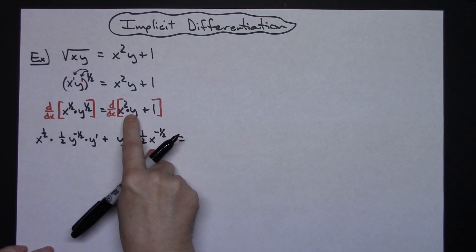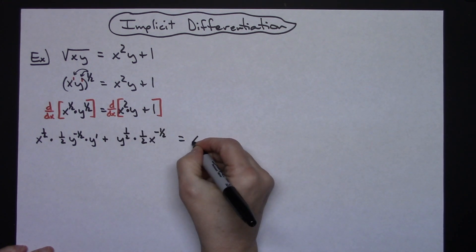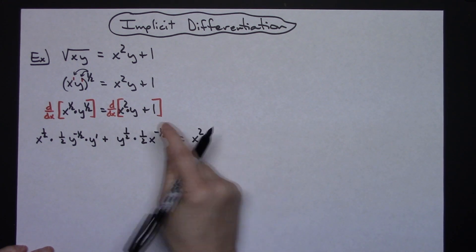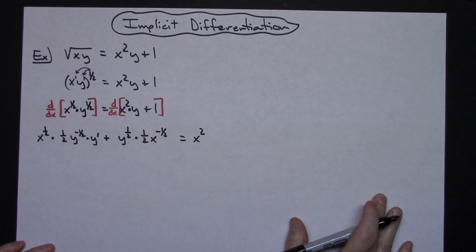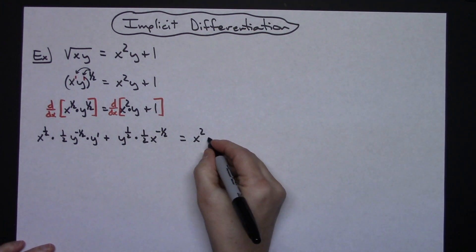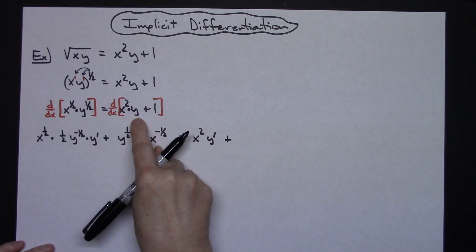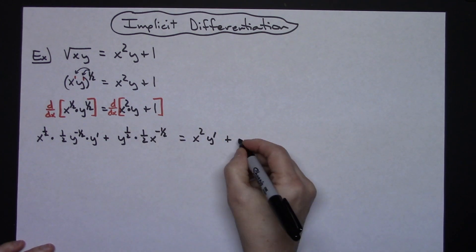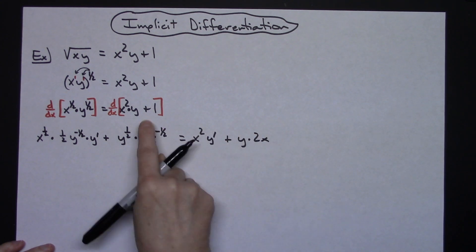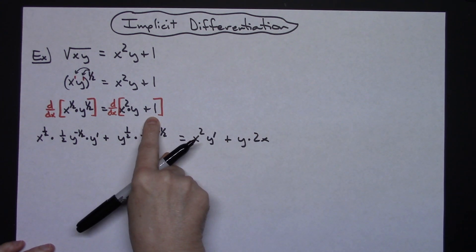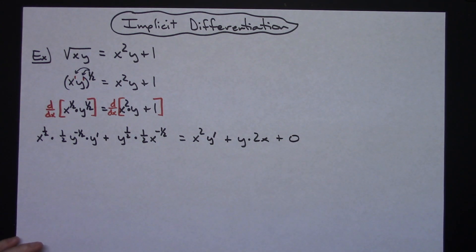Now I'm going to do product rule on the right hand side. The first is x squared, times the derivative of the second, which would just be y prime. Plus the second, which is y, times the derivative of the first, which is 2x. And then the derivative of the 1, which is plus 0.